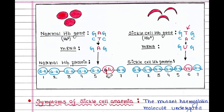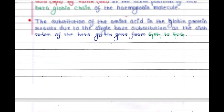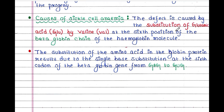Now we will see what happens in the disease. There is a mutation in this gene where the base T is substituted by A. The RNA forms accordingly with a GUG codon instead of the normal GAG. The faulty protein forms with the amino acid valine at the sixth position instead of the normal glutamic acid. So the defect is caused by the substitution of glutamic acid by valine at the sixth position of the beta globin chain of the hemoglobin molecule, due to a single base substitution at the sixth codon of the beta globin gene from GAG to GUG.